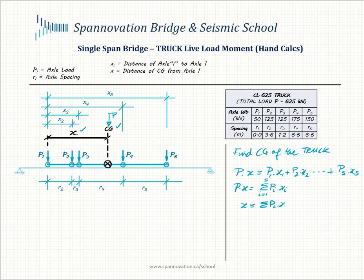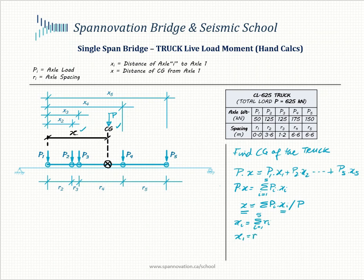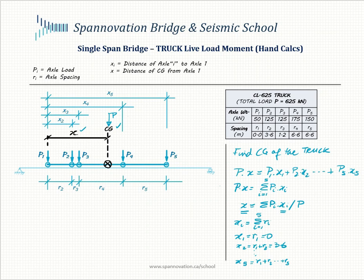Solving for X, we get X equals the summation of Pi times Xi divided by P, the total vehicle load. Xi in this expression is the summation of Ri as i varies from 1 to 5, so X1 equals R1 which is 0, and X5 equals R1 plus R2 all the way to R5. For a CL625 truck, this distance X works out to be 9.2 meters.